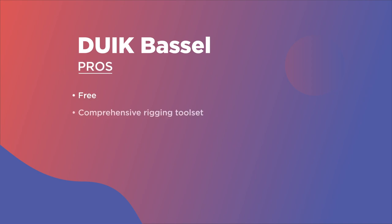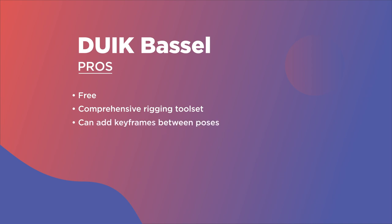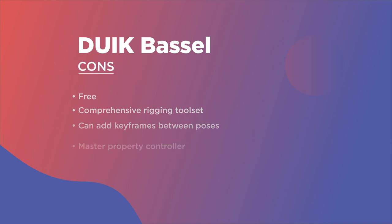For the Duik Basel connector, one of the big advantages is that it's free and comes with a complete and comprehensive set of tools for rigging and animation — not just the connector. So you're getting so many different tools all bundled into one, all for the wonderful low price of nothing. The fact that you can add keyframes between the pose states is a useful advantage, and the fact that you can connect animations to any numeric property opens up a lot of wonderful possibilities. And that Connect to Opacity script is super cool and super useful.